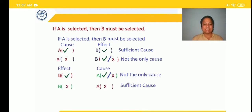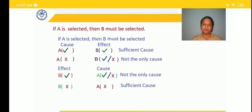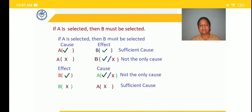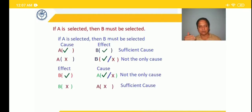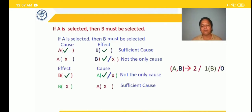If B is selected, it may be because A was selected or because of some other cause. So occurrence of the effect doesn't confirm the cause happened. But if B is not selected, none of the causes responsible for the effect occurred, so we can also say A is not selected. Two statements we are sure of: if cause happens effect happens, and if effect is not happening, cause also did not happen. In short form, we write this as AB — either both are selected, or B alone is selected, or none are selected.